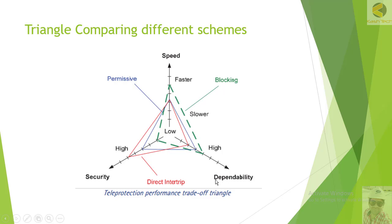As far as dependability is concerned, the direct transfer trip scheme is the lowest in dependability, the permissive scheme is second, and the blocking scheme is highest in dependability.